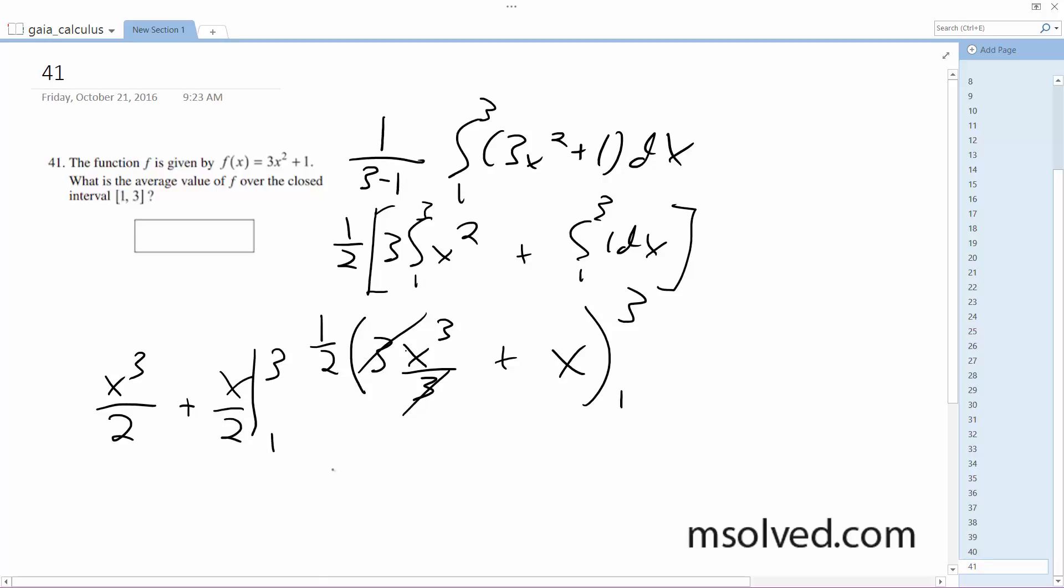We end up with—alright, I had to pause for a second to think—but what we end up with here, we plug in 3, so it's going to be 27 over 2 plus 1 half minus 1 half plus 1 half.